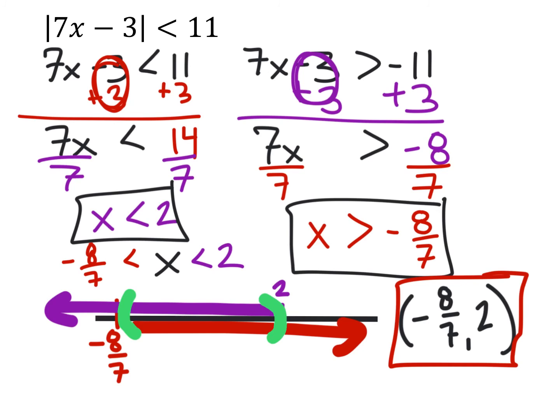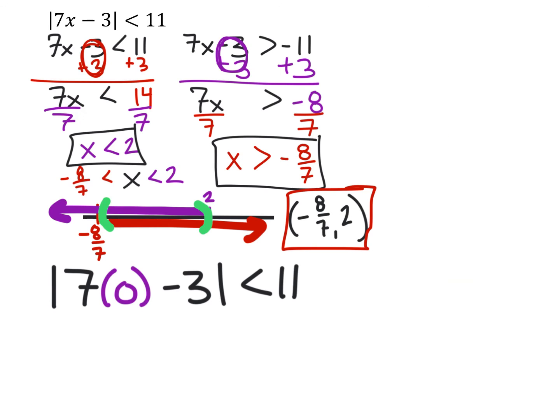Now, it's important also to check our work here. And a value between negative 8 sevenths and 2 would be 0. So let's go ahead and use the original inequality and check our work. Alright, so we have the absolute value of 7 times 0, because 0 is between negative 8 sevenths and 2, minus 3. The absolute value of that needs to be less than 11. Let's go ahead and check. 7 times 0 is 0. And we have the absolute value of 0 minus 3 needs to be less than 11. Well, that gives us the absolute value of negative 3, which is 3. And 3 actually is less than 11, so that seems to work.